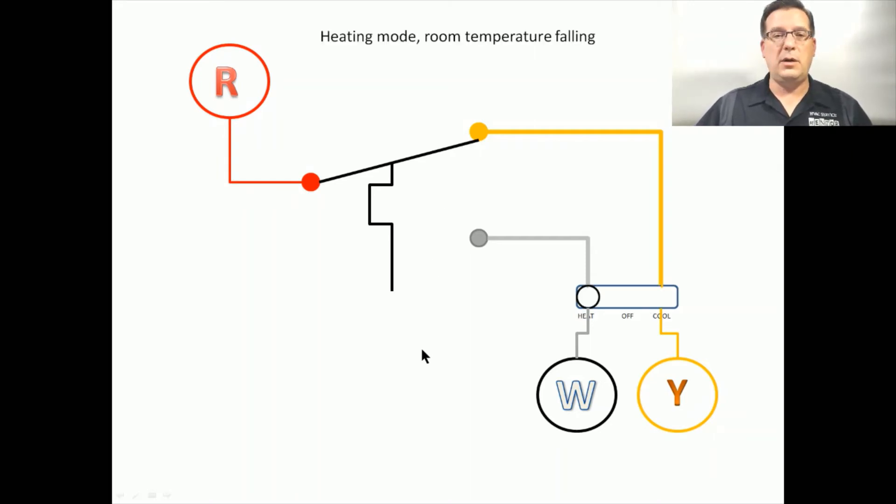As we continue on, let's check it in heating mode. We've moved our mode selector from cool over to heat, and we're going to say that the room temperature is now falling. Let's apply lowering or falling room temperatures to the thermostat, and it will respond by moving in the opposite direction, completing the circuit between the R terminal and the W terminal.